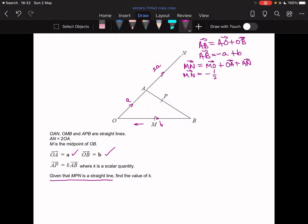And then I have to add OA, which is a, and AN, which is 2a. If I simplify that, I get that MN is equal to 3a minus half b. So I've got MN.